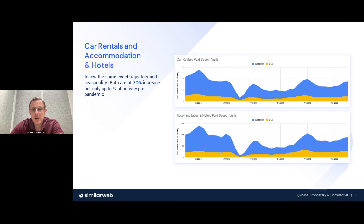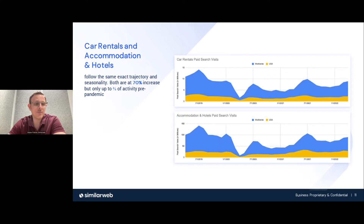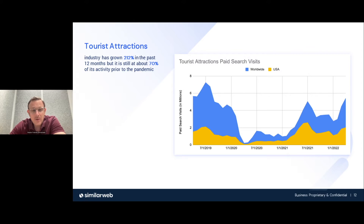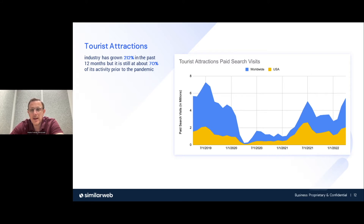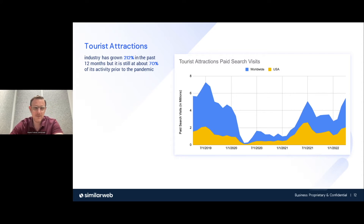Within travel, car rentals and hotels follow very much the same trajectory, both at 70% increase in the past 12 months and about two-thirds of where they were pre-pandemic — a better story than aviation. There are big spikes during the summers of 2020 and 2021 that helped those industries recover. Tourist attractions show similar patterns, with significant growth of 212% in the past 12 months and about 70% of pre-pandemic activity — doing fairly well but still recovering.